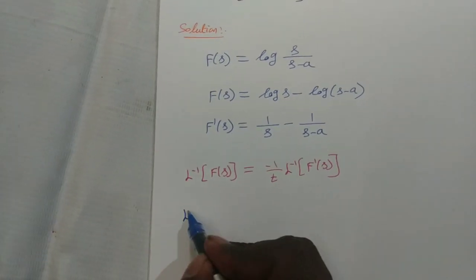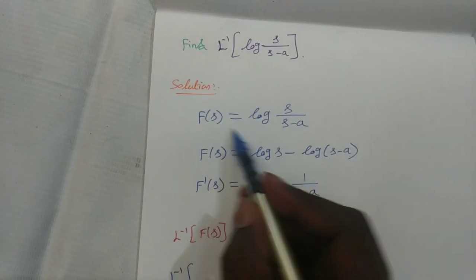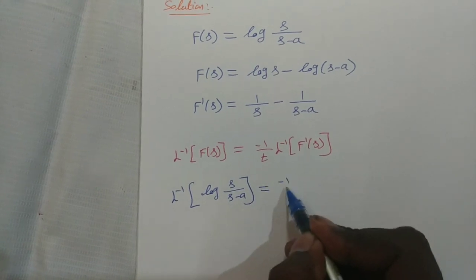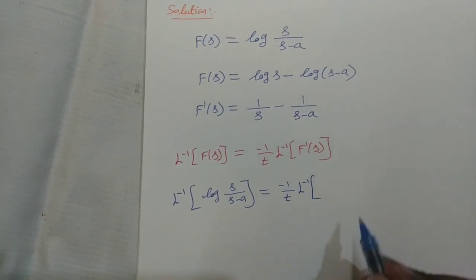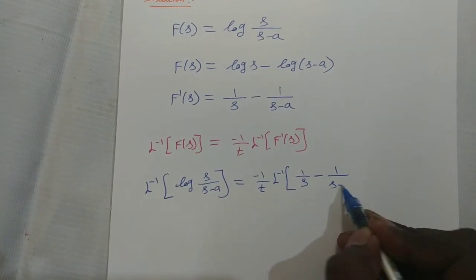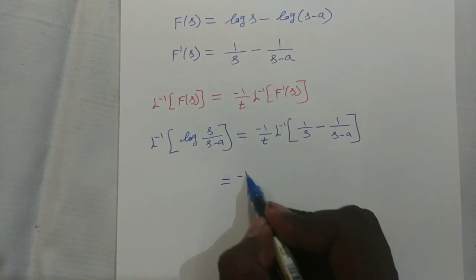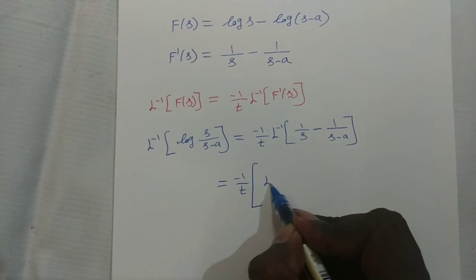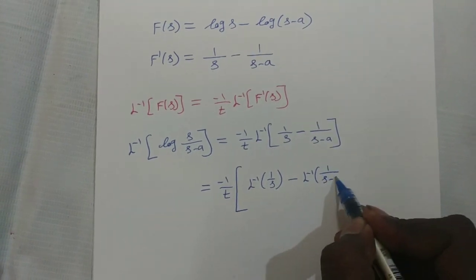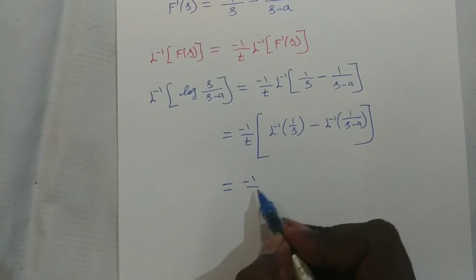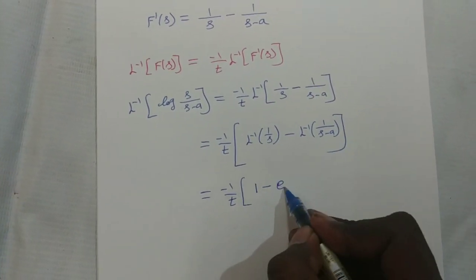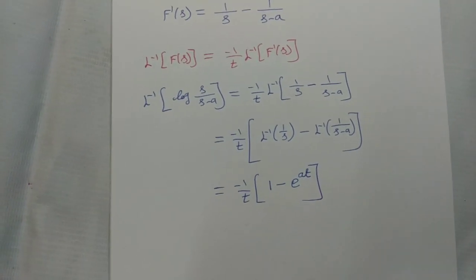Now applying the property: L inverse of log(s/(s − a)) equals minus 1/t times L inverse of F'(s) = [1/s − 1/(s − a)]. Since L⁻¹{1/s} = 1 and L⁻¹{1/(s − a)} = e^(at), the answer is minus 1/t times (1 − e^(at)). This is the answer of the problem.